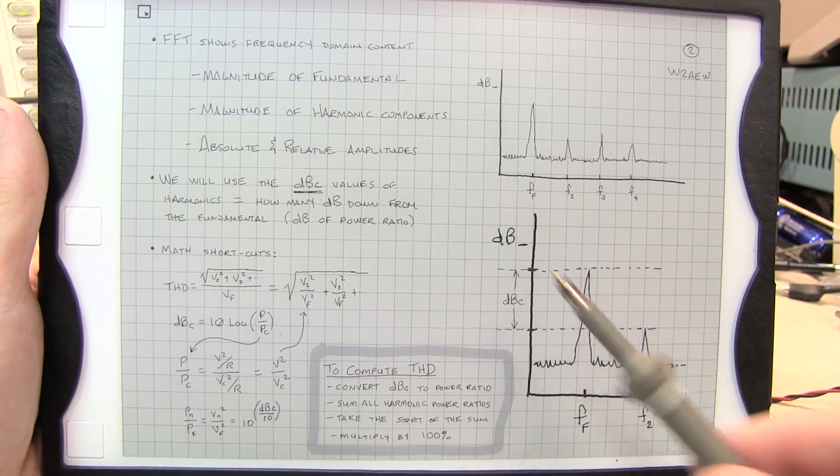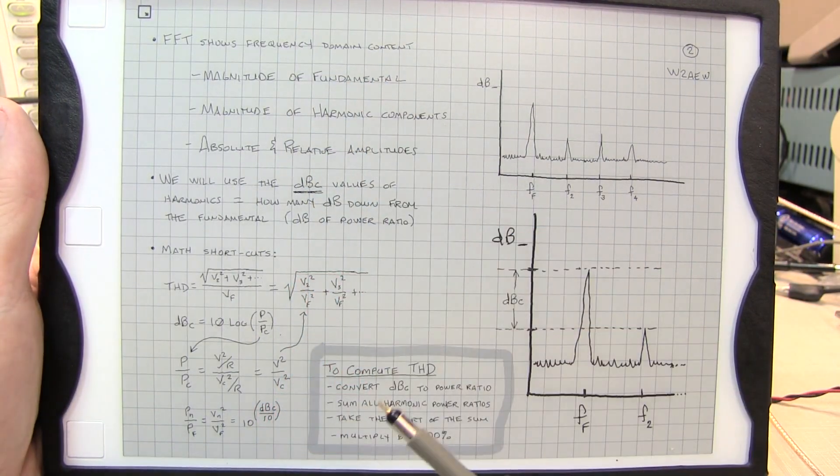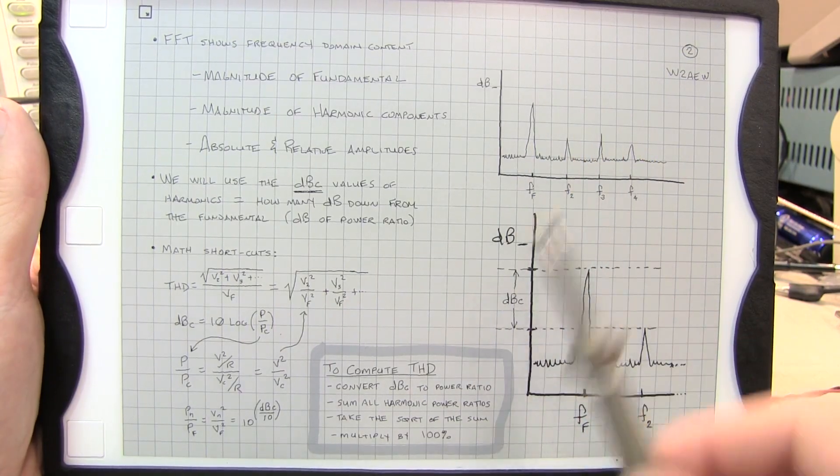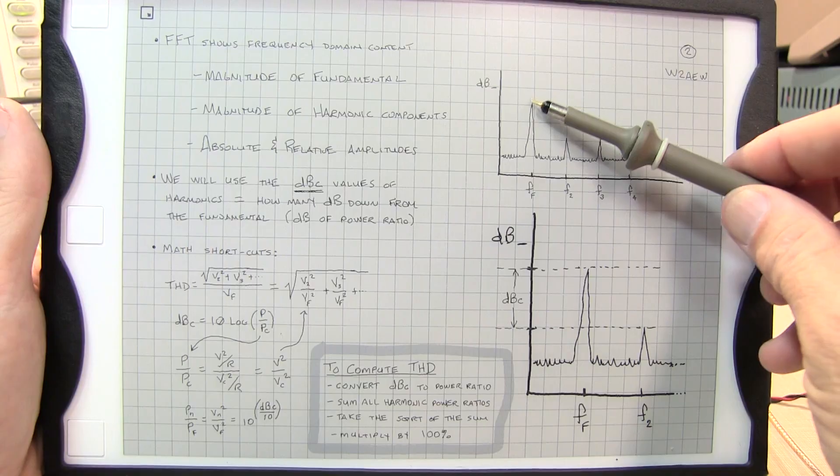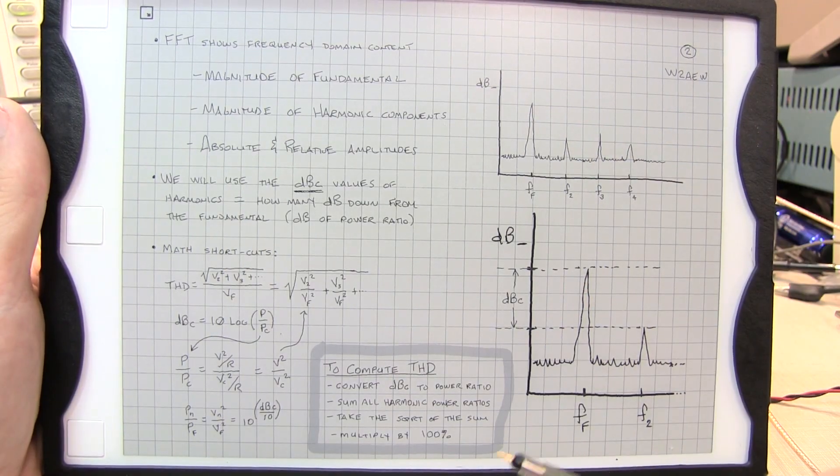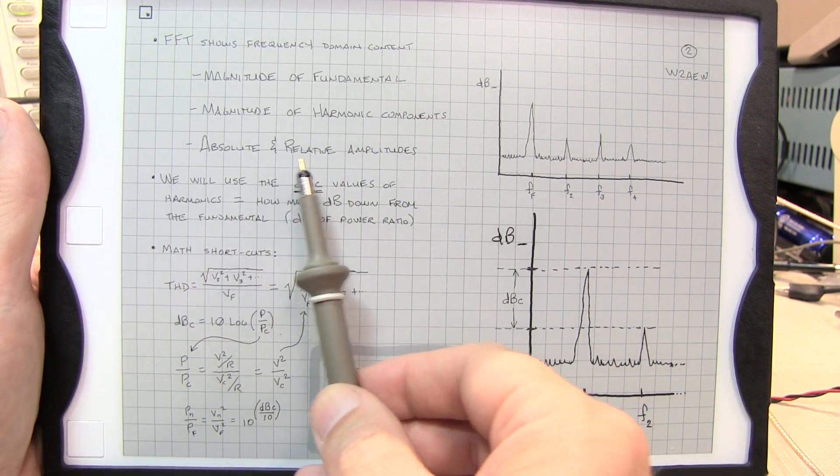The FFT is going to show us the frequency domain content of the signal, both of the fundamental as well as all of the harmonic content. Now we can make measurements of absolute magnitude of each of these components, but more importantly, we could make relative measurements.